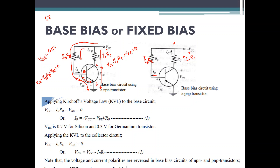These two equations are derived because there will be numerical problems asking you to find IB, IC, VCE, or VBE. They might give some parameters and ask you to find the value of IC, VCE, and VBE for the fixed bias or base bias circuit. You need to remember the formula for IB and VCE and use these formulas to get the required parameters.